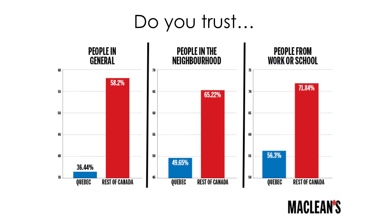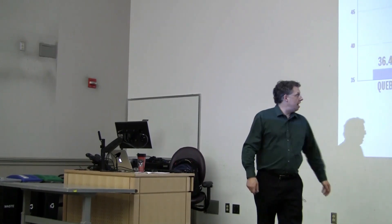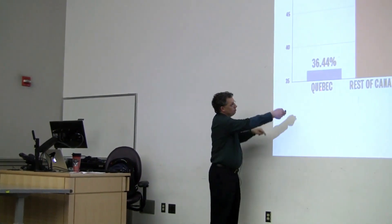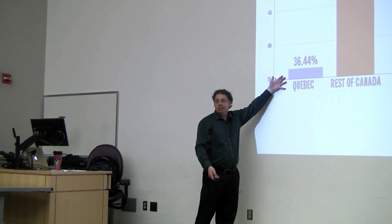Here's an example from Maclean's, the Canadian news magazine. They're talking about the trust problem that people have in Quebec, saying that in the rest of Canada, people are really trusting — they trust people from work and school, from the neighborhood, and people in general. But the Quebecois don't have this level of trust. You've got these great big red bars for the rest of Canada and these little blue bars for Quebec. It looks really bad for Quebec — until you notice that they've truncated the axis at 35, so these bars would continue way down below the floor if the graphics were represented honestly.